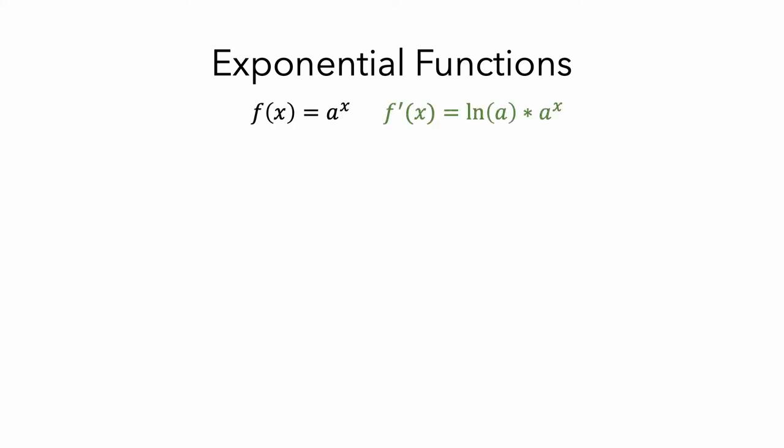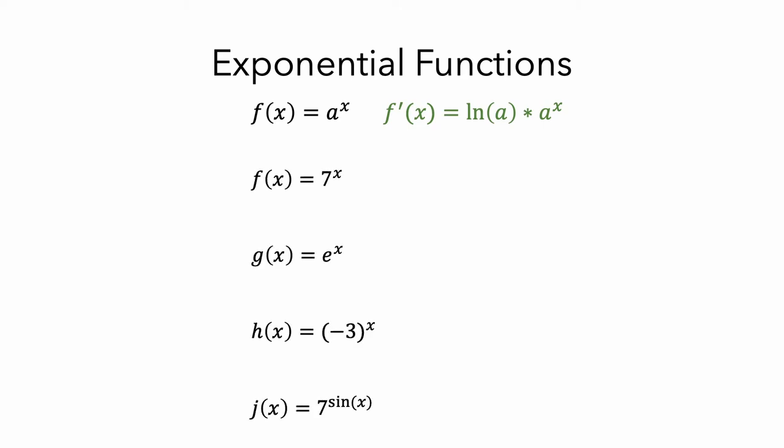Here are a few examples. At the top of the screen, I'll include the rule for finding the derivative of an exponential function. Pause the video and think about for which of these examples we can use the rule for exponential functions. For f of x equals 7 to the x, the base is 7 and the exponent is just x, so we can use the rule and the derivative would be the natural log of the base times the original f of x.